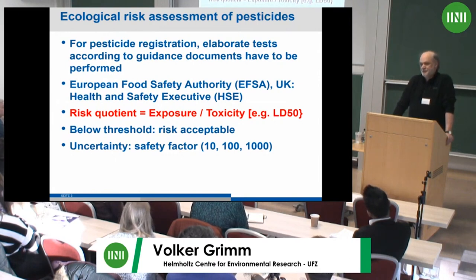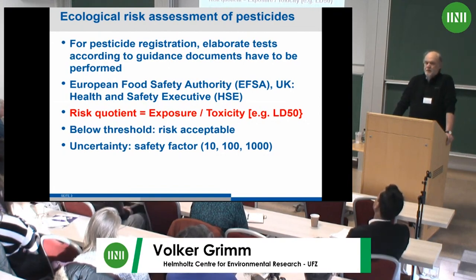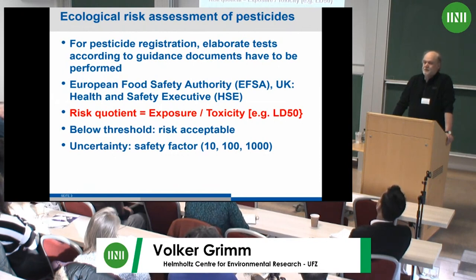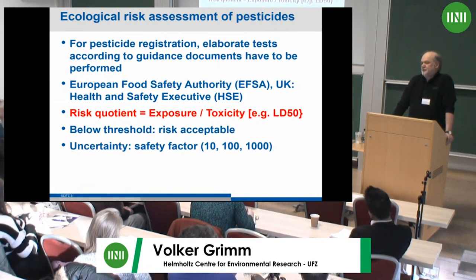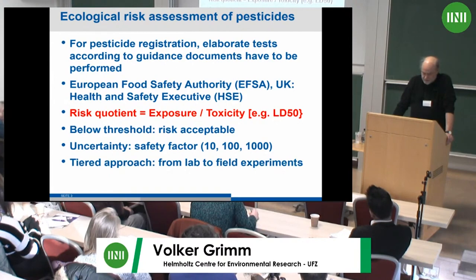If your compound does not pass this test, you have to go to the next tier — greenhouse or mesocosm experiments — which provides a higher level of realism. If you still don't pass, you go to the field under almost natural conditions, which is very expensive. These safety factors vary according to the organisms — much higher for some species than for earthworms, for example.